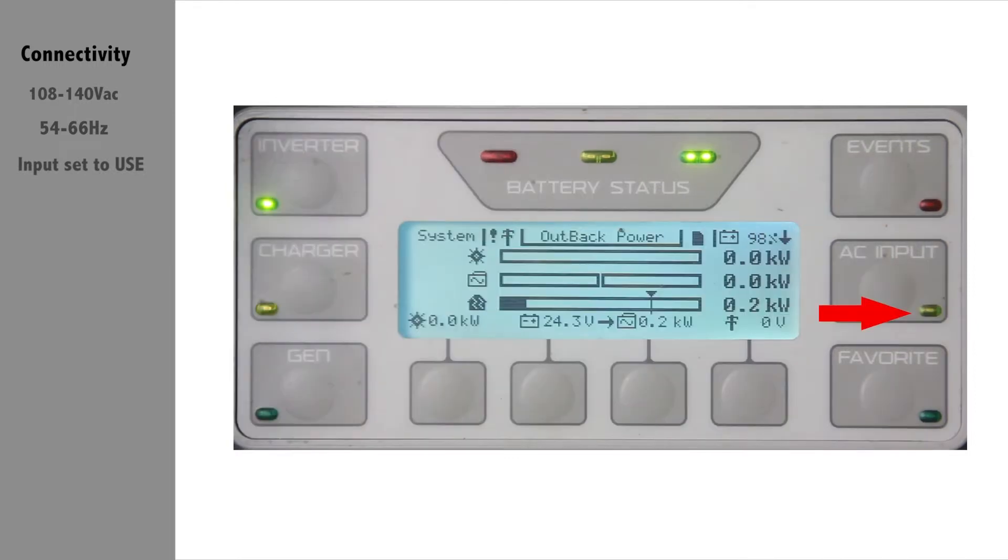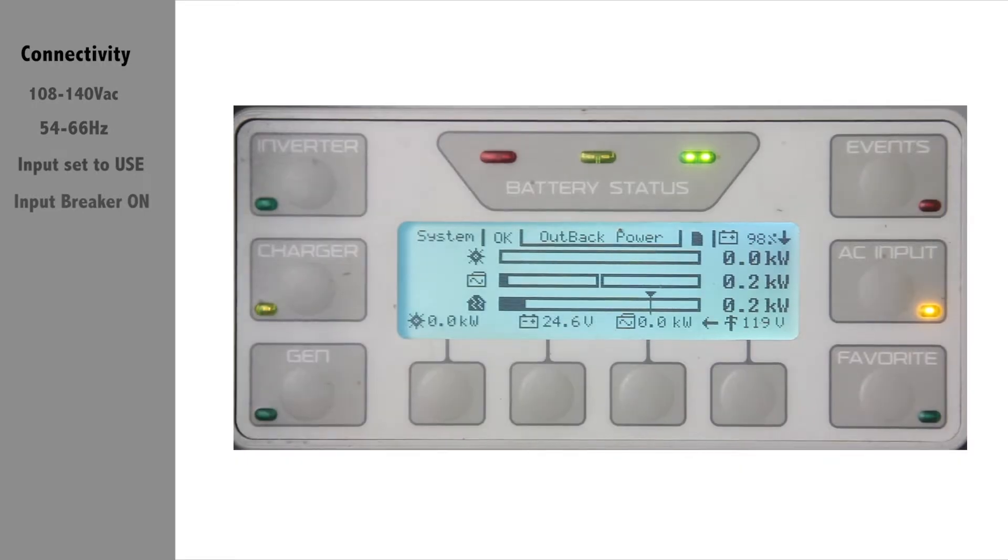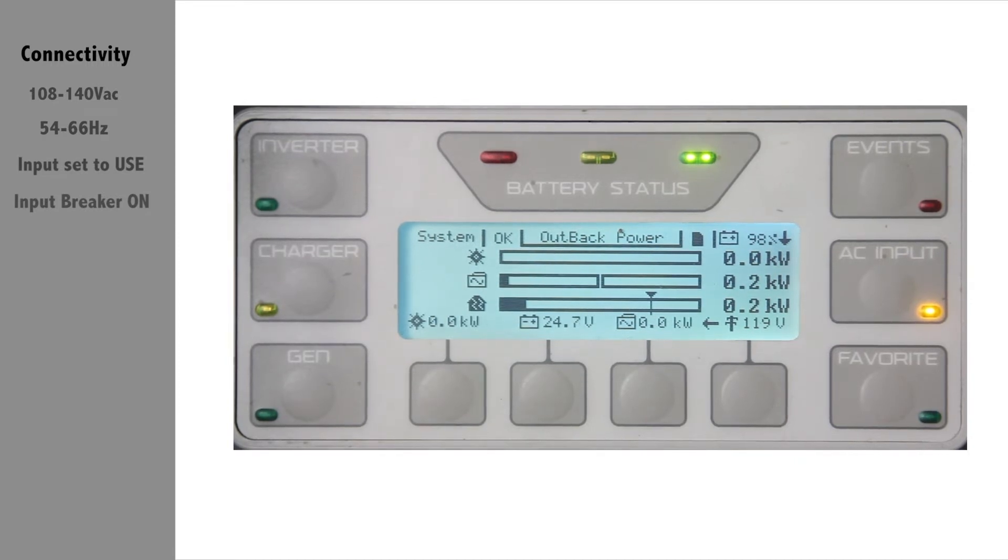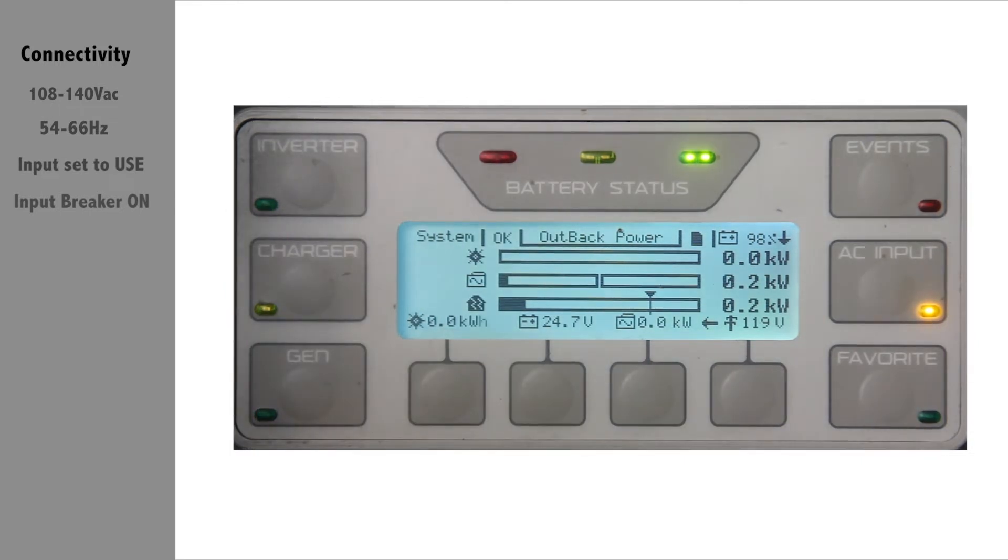If you do not see the AC input light at all, make sure your AC input breaker is turned on. If the source is rejected after previously being accepted, the inverter will go back to invert mode, and the AC input light will switch from solid to flashing.